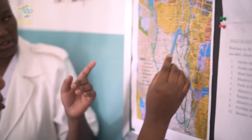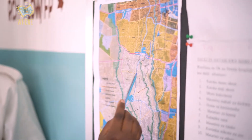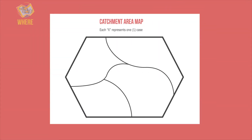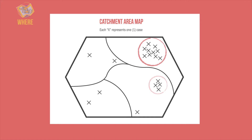Also use data to analyze where outbreaks occur. Tracking cases on a map is a way to analyze high-risk and most affected areas. Mark the residencies of the patients from each case on a map. You can use the catchment maps prepared for microplanning when tracking the location of outbreaks.